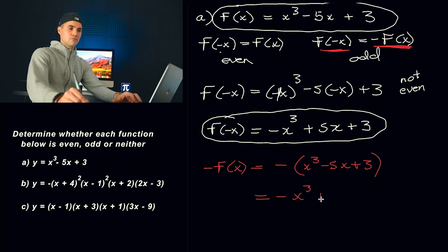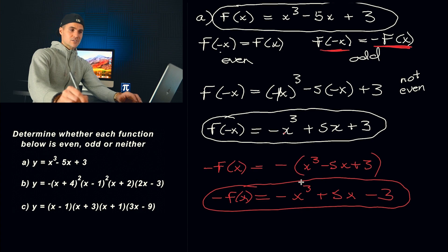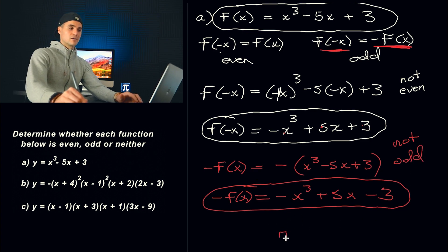To find negative f of x, put a negative in front of the entire function and distribute it into all the expressions. So the simplified function for negative f of x is negative x cubed plus 5x minus 3. Does f of negative x equal negative f of x? Notice it almost does — negative x cubed matches, 5x matches — but the constant differs: we have positive 3 versus negative 3. They're not the same, so this function is not odd. Since it's not even and not odd, the function in part A is neither.